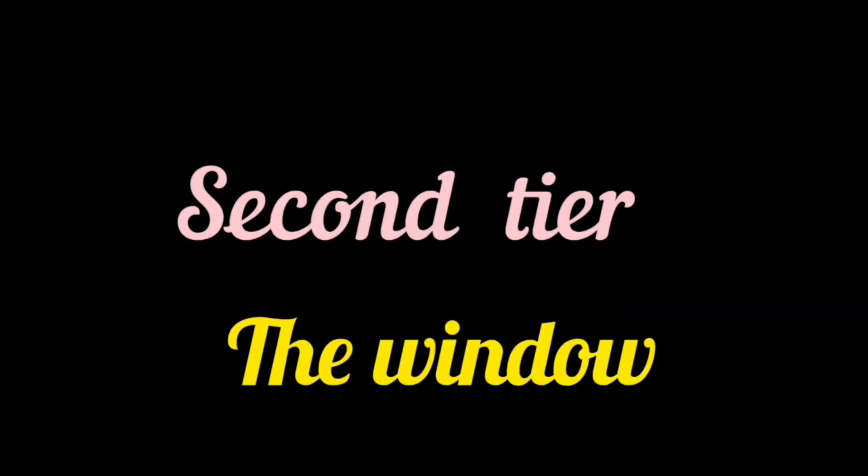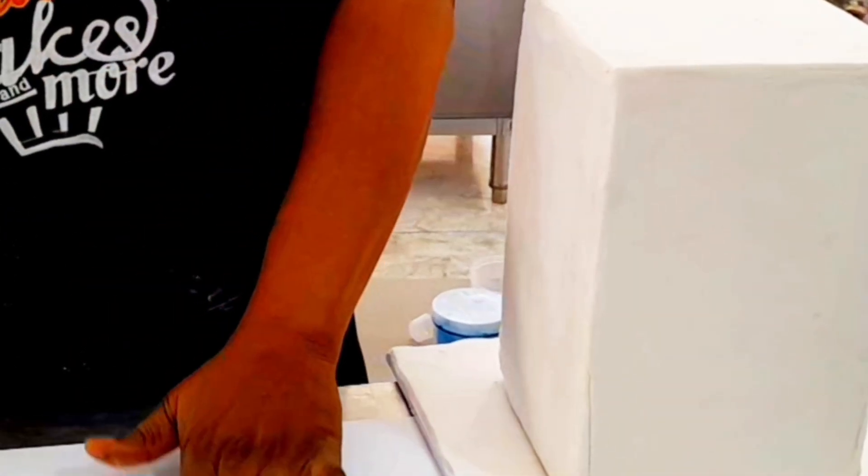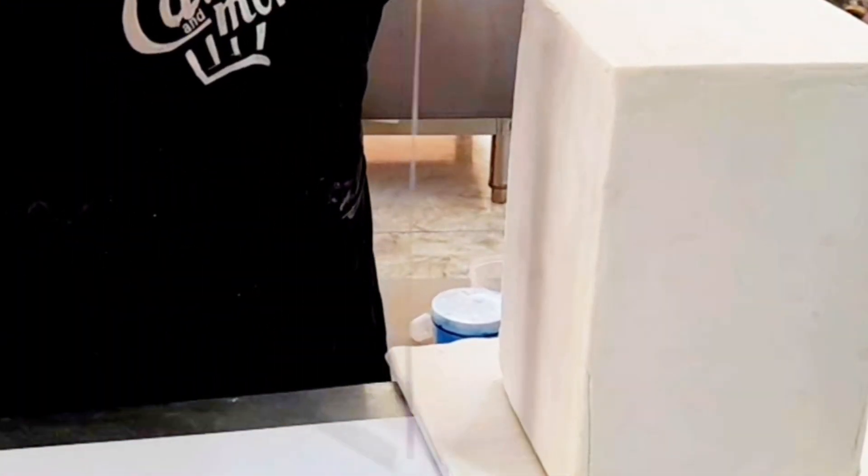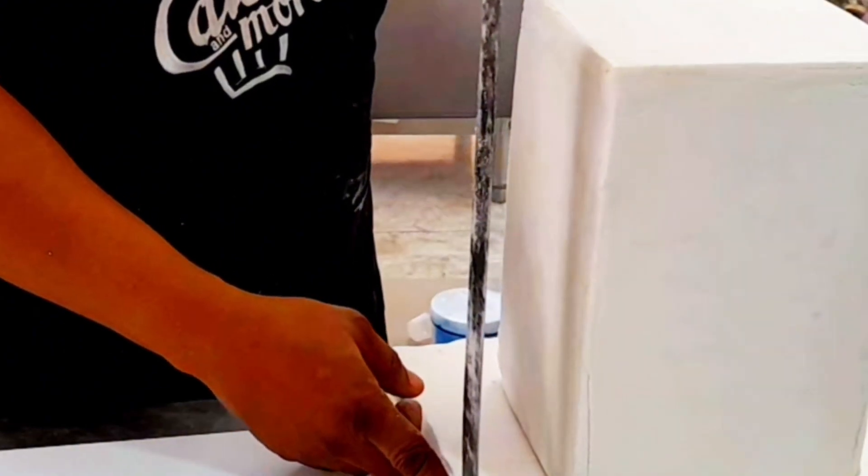Now, for the second tier window template, I will be using 6 inches kick or 6 inches dummy. Whichever you decide to use, you should make sure that the height is up to 10 inches.